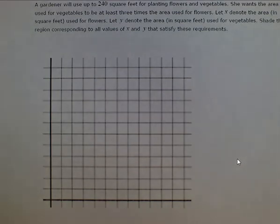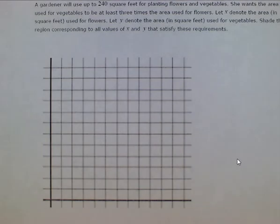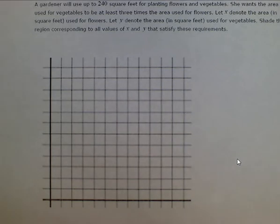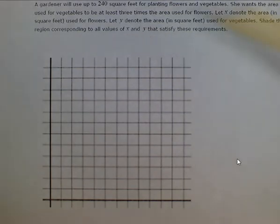We have a word problem here that we're going to graph the system of inequalities in order to solve. It says a gardener will use up to 240 square feet for planting flowers and vegetables. She wants the area used for vegetables to be at least three times the area used for flowers. Let x denote the area in square feet used for flowers, and let y denote the area in square feet for vegetables. Shade the region corresponding to all values of x and y that satisfy these requirements.